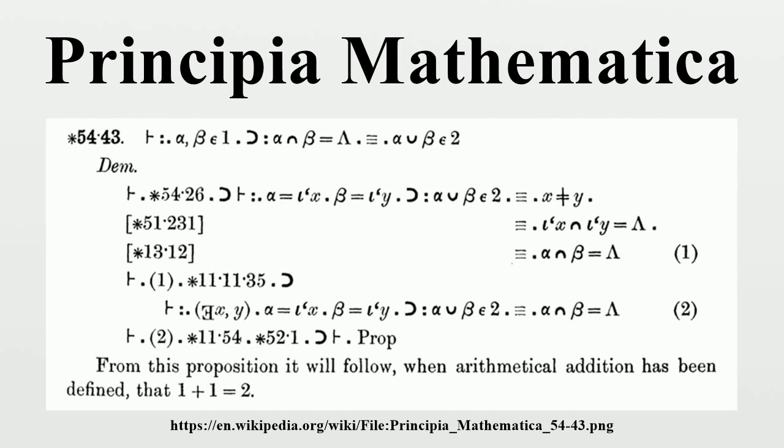Primitive ideas (cf. PM 1962: 90-94). For the first edition: Elementary propositions. Elementary propositions of functions. Assertion: introduces the notions of truth and falsity. Assertion of a propositional function. Negation: If p is any proposition, the proposition 'not p', or 'p is false', will be represented by tilde p.